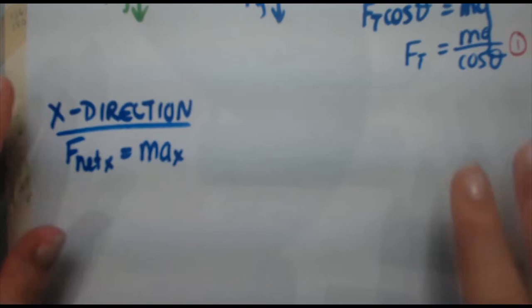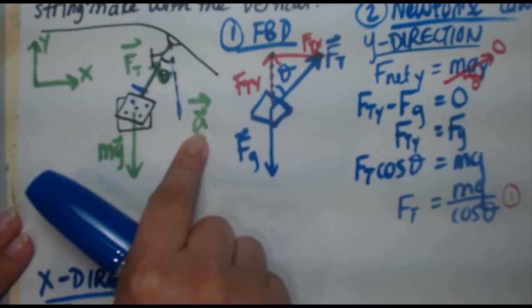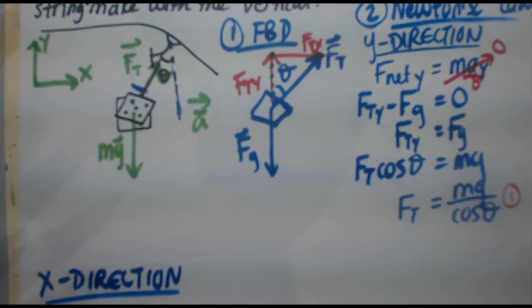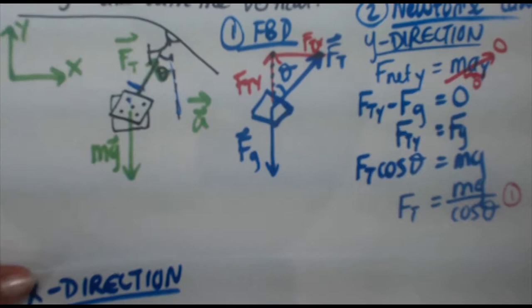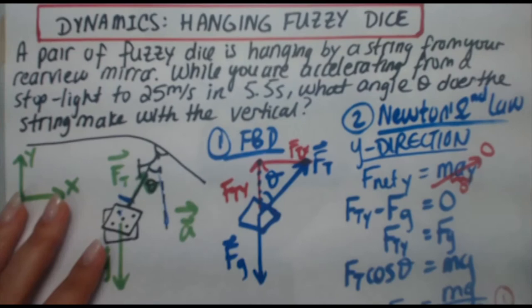F net x equals m a x. Now this is a little different. So you ask yourself again, am I accelerating in the x direction? And this time the answer is yes, you are. The car is going forward. If the car was not accelerating in the horizontal direction, you wouldn't get this dice moving off to the side like this at this angle. If you were accelerating at zero, or if you were just not moving, the dice would be hanging vertically as per usual, just like when the car is parked. So we are accelerating, but then the question becomes how much?